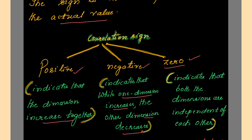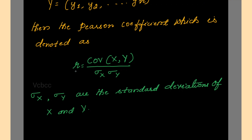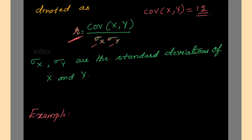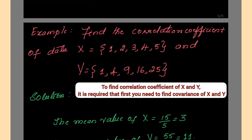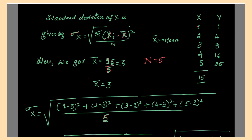We need to find out how strong the relationship between the two variables is. The correlation coefficient is also called the Pearson coefficient, indicated by lowercase r: r = covariance(x, y) divided by the standard deviation of x times the standard deviation of y. To find the correlation coefficient, first find the covariance, then substitute into this formula. We have already computed the covariance as 12, so now we need to find the standard deviation of x and the standard deviation of y.